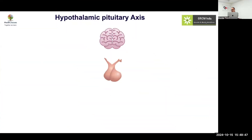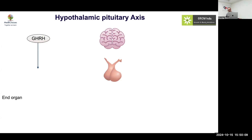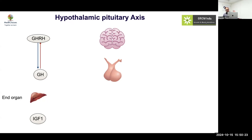We have talked about the various development, structure and other things. Now we touch base about the overall hypothalamic-pituitary axes because this is the core as far as the pathophysiology of any disorder is concerned. We have the hypothalamus which is the prime regulator, pituitary which is the intermediary, and then the end organ. Growth hormone releasing hormone regulates growth hormone, which acts directly on the liver to cause IGF-1 — the somatomedin hypothesis, the GHRH-GH-IGF1 axis.